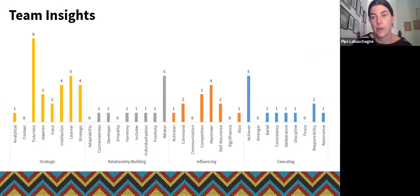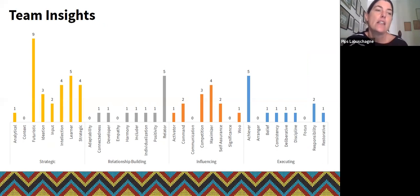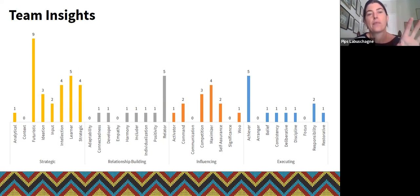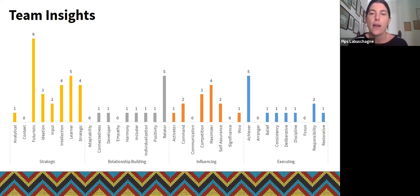Looking at the insights and the number of people: I've split it into the different domains. Most of you have strength in the strategic domain — futuristic is the most common, which makes sense in terms of thinking about the future. The strategic domain seems to be the bulk of where your strengths lie. Relationship building is the lesser one, and executing is quite similar — slightly higher than relationship building, which I found interesting given that executing is something you're having to do on a day-to-day basis as entrepreneurs.